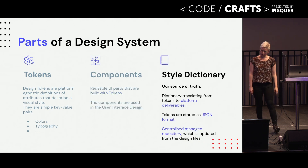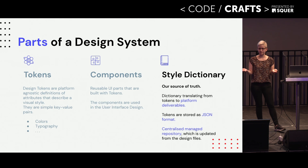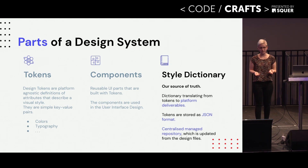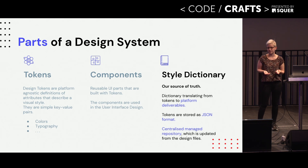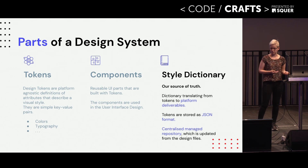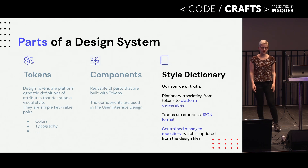The third important part of our design system is the style dictionary. As the name indicates, it translates the tokens into platform-specific formats. Because tokens are stored as a JSON format, and no platform can really read that - on an Android platform it would not know that this is something for styling my app. It is a centralised repository where all of the platforms get their information from.